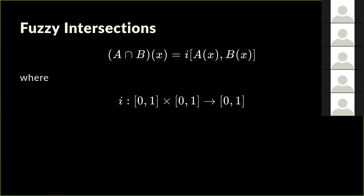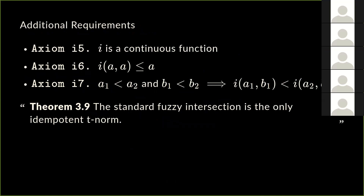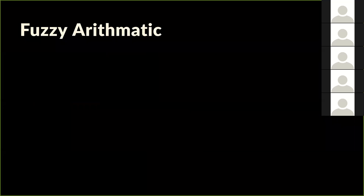Similarly, fuzzy intersection is a function taking two membership grades from [0,1]×[0,1] and giving a grade in [0,1]. There's an axiomatic skeleton that any intersection function should satisfy. You can customize by adding or removing axioms to suit your context — it's less constrained than crisp set intersection operators. The same principle applies to fuzzy unions. The key takeaway is that you have flexibility in defining these operations within a principled axiomatic framework.